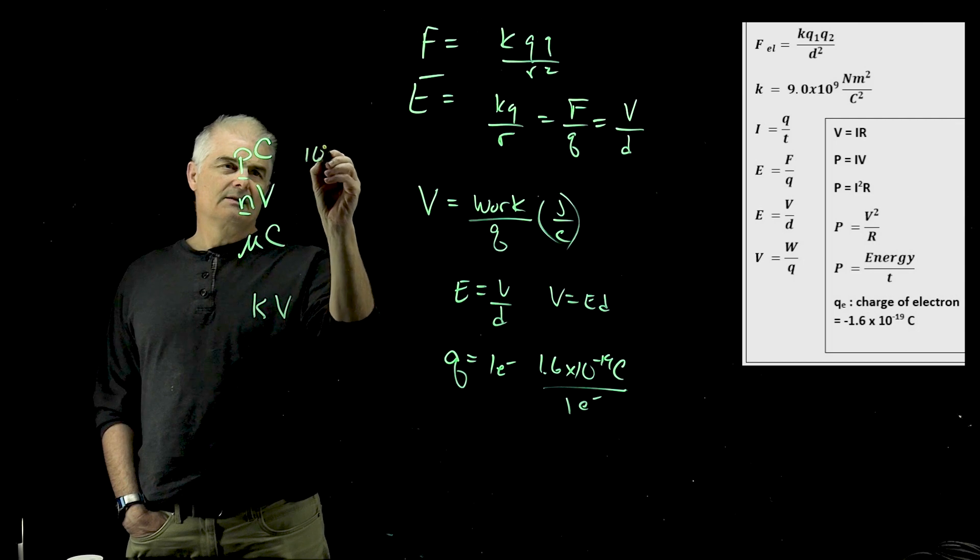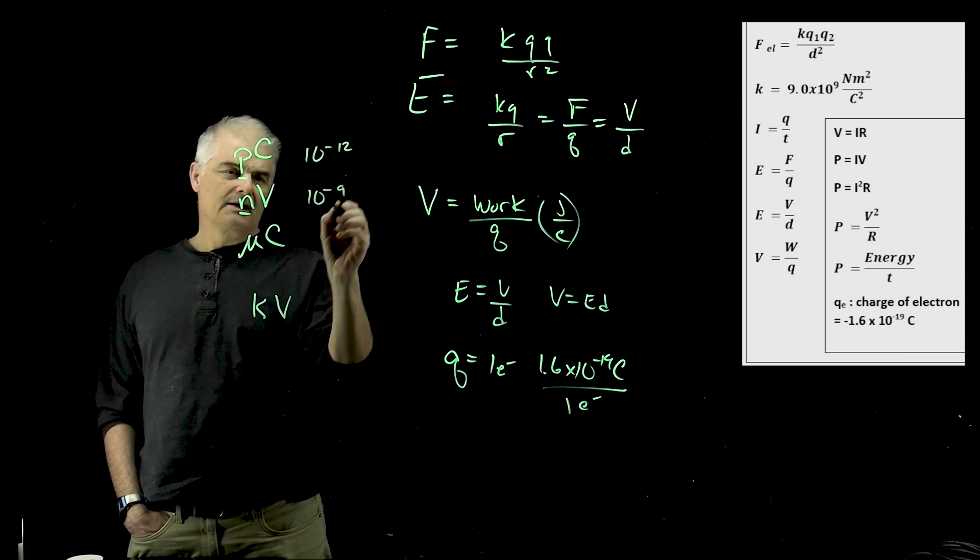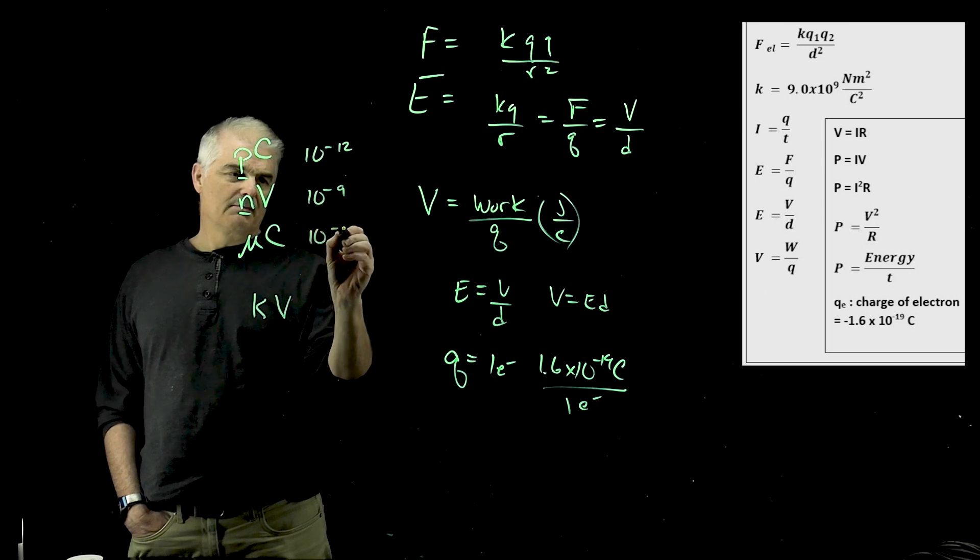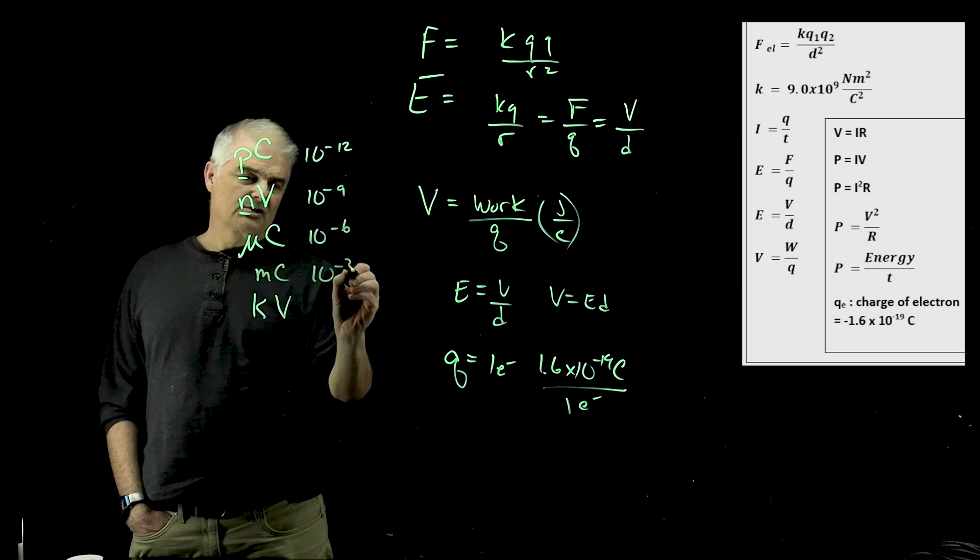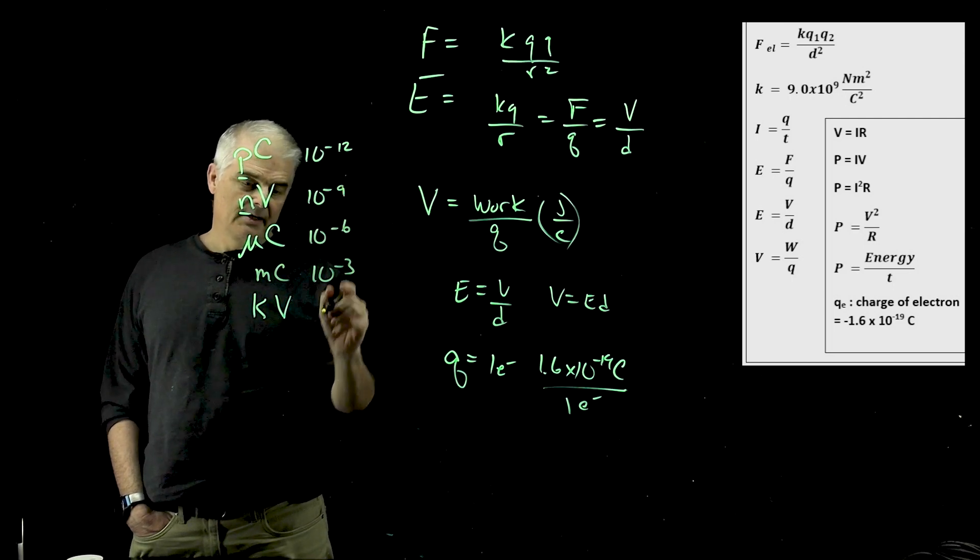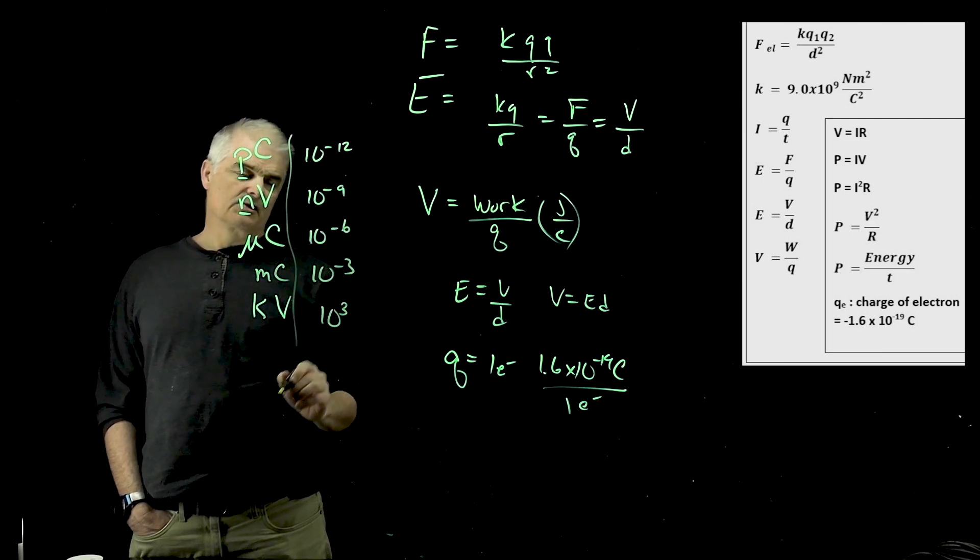Now, remember, pico is 10 to the minus 12th. It's a trillionth. Nano is 10 to the minus 9th. Micro is 10 to the minus 6th. Actually, let's do one. Millicoulombs, for example, will be 10 to the minus 3rd. You see pattern 12, 9, 6, 3.